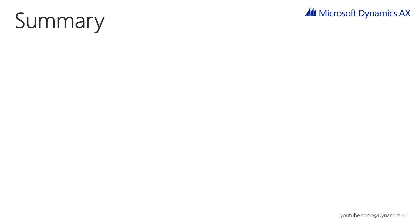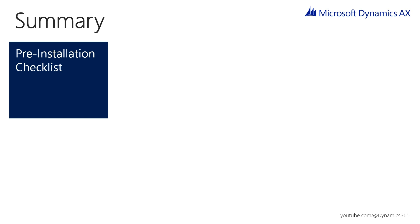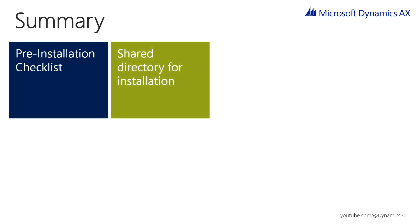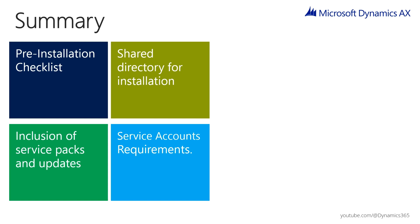To summarize, in this module we covered the following topics: the pre-installation checklist for retail headquarters, shared directory for installation, inclusion of service packs and updates in the new installation, and requirements for service accounts.